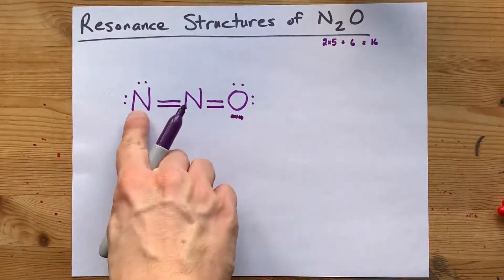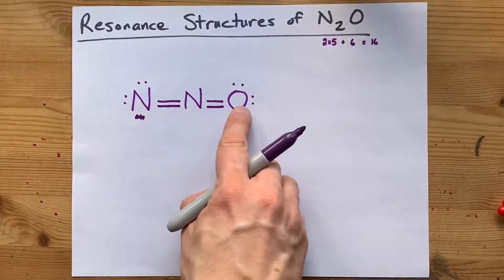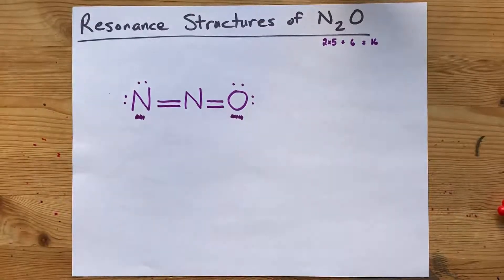Now, I have a nitrogen atom with 8 electrons around it, another nitrogen with 8, and an oxygen with 8. The octet rule is satisfied for all of these atoms.